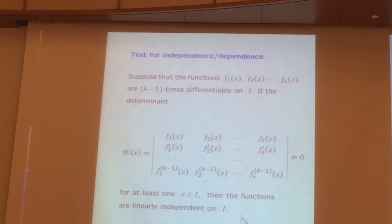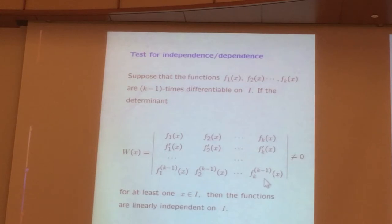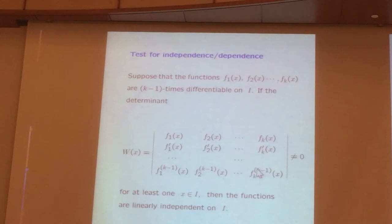What's the test for independence and dependence of functions? You've got k functions; assume they are k−1 times differentiable. Write down the determinant whose first row is the functions, the second row is their derivatives, and so on, down to the k-th row which is the (k−1)-th derivatives. That determinant is called the Wronskian. If it's not zero for at least one x, they're independent. If it is identically zero, well, that's a real question — it might be independent, it might be dependent.